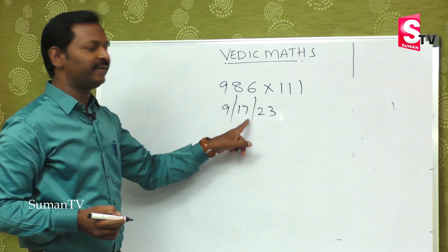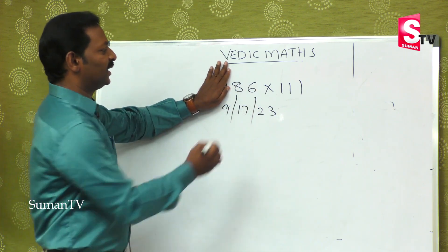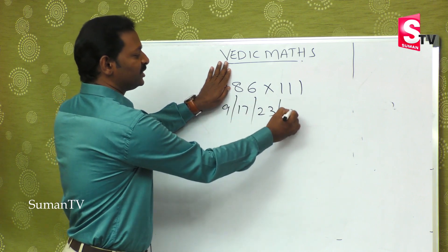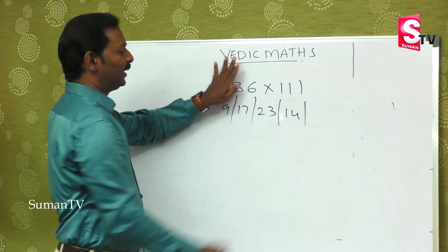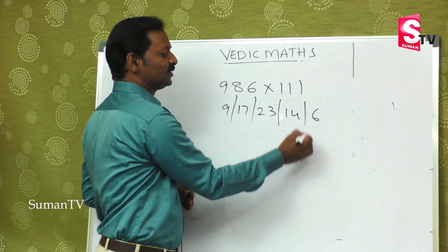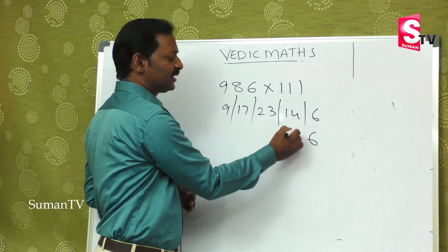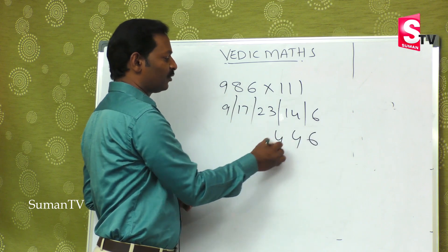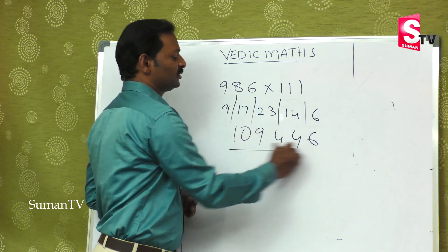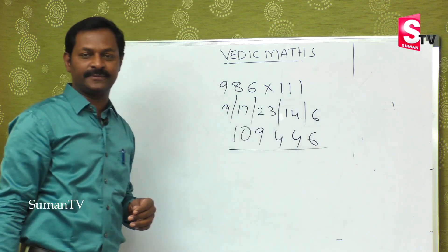Whenever we complete the group of 3, we close that. Then the last 2 digits: 8 plus 6 is 14. And the last digit alone is 6. So the final answer is 1, 0, 9, 4, 4, 6. This is the right answer.